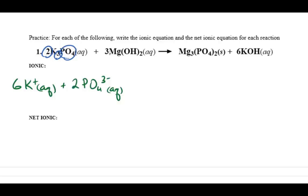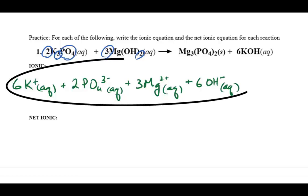The balanced reaction gives us three aqueous magnesium hydroxides, and each magnesium hydroxide has one magnesium ion and two hydroxide ions. So that is a total of three magnesium ions and six hydroxide ions. So these are the reactants.